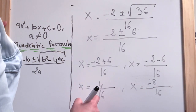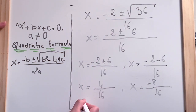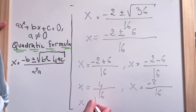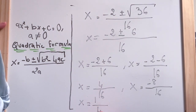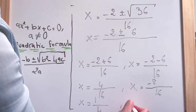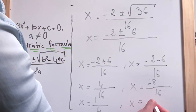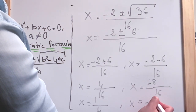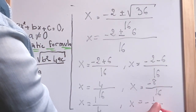And we can still simplify this. So we write x equal to 1 over 4, and x equal to minus 1 over 2.